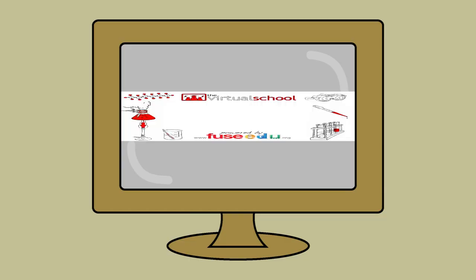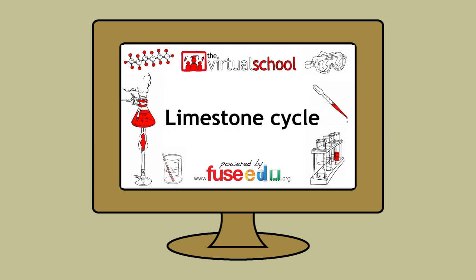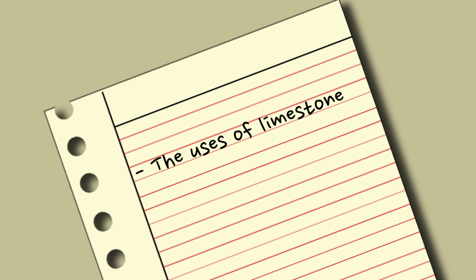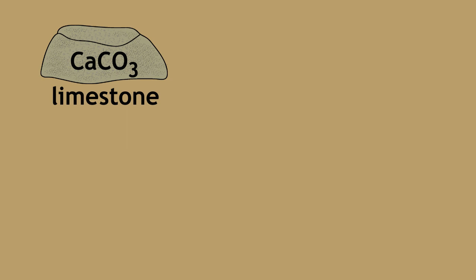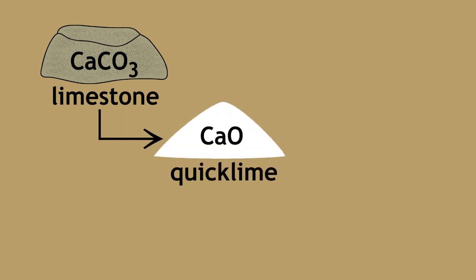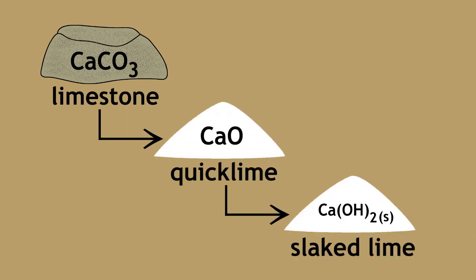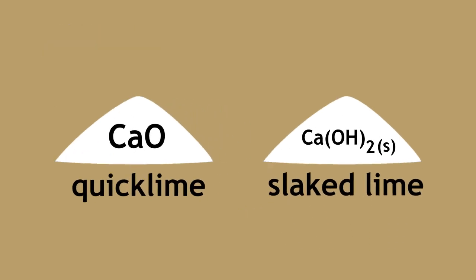We have previously learned about how limestone is formed and the limestone cycle. We will now learn about the uses of limestone and its many real-life applications. Limestone is the starting material in the production of quicklime, which is calcium oxide, and slaked lime, which is calcium hydroxide, as seen in our previous lesson. There are many more uses to limestone than simply producing quicklime and slaked lime.